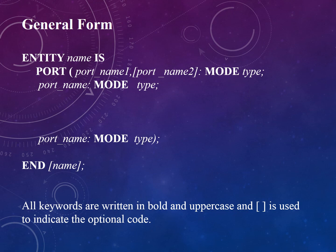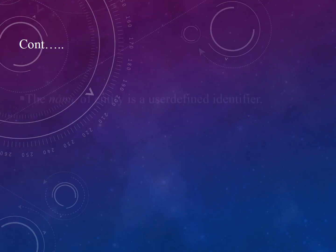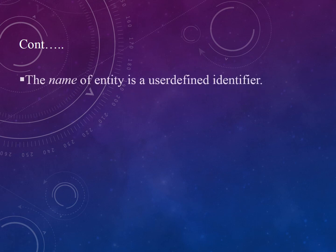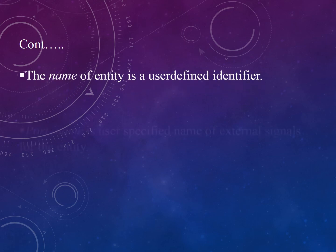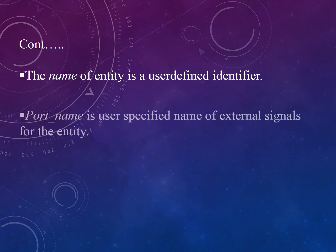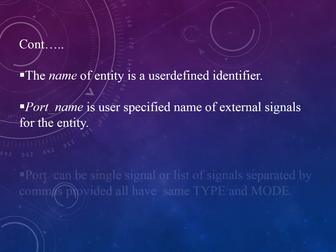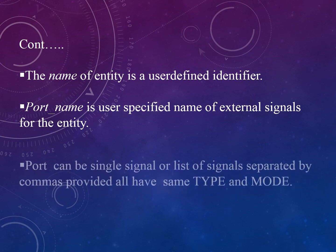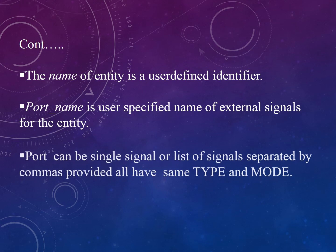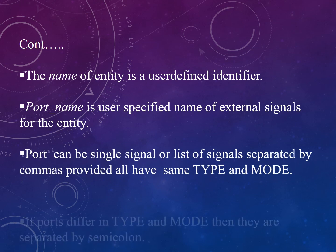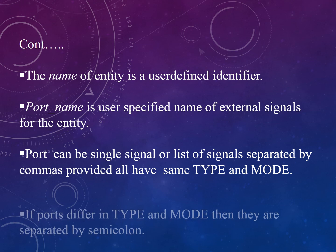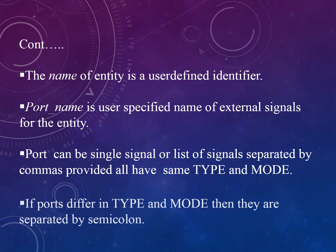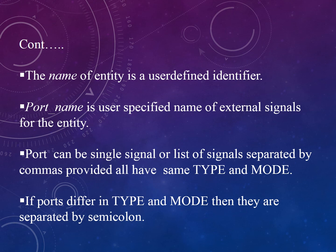The name of the entity is a user-defined identifier. Port name is the user-specified name of external signals for the entity. A port can be a single signal or a list of signals separated by commas, provided all have the same type and mode. If ports differ in type and mode, they are separated by a semicolon. After practicing two or three designs, it will be easy to understand the general form.